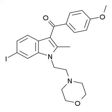AM630 is a drug that acts as a potent and selective inverse agonist for the cannabinoid receptor CB2, with a Ki of 32.1nM at CB2 and 165x selectivity over CB1, at which it acted as a weak partial agonist. It is used in the study of CB2-mediated responses and has been used to investigate the possible role of CB2 receptors in the brain.